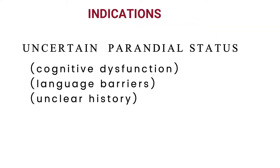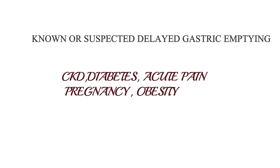Specific indications for gastric ultrasound include when we don't know for certain the fasting status of the patient — such as in cognitive dysfunction, language barriers, or when the history from the patient is not clear. Other indications include known or suspected delayed gastric emptying in conditions like CKD, diabetes, acute pain, pregnancy, and obesity.